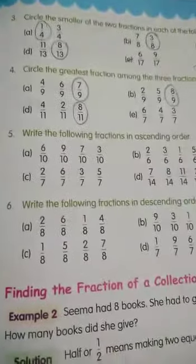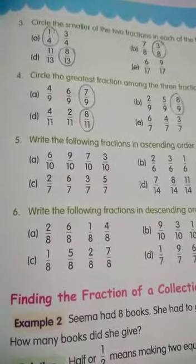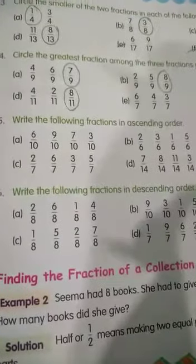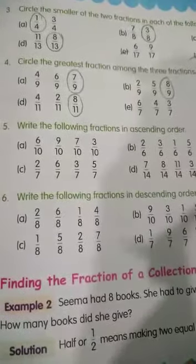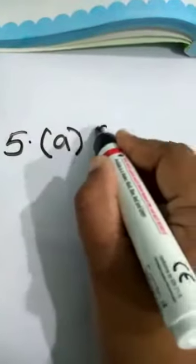So we have completed the 1st, 2nd, 3rd, and 4th bit. The 5th bit: you have to write the following fractions in ascending order.